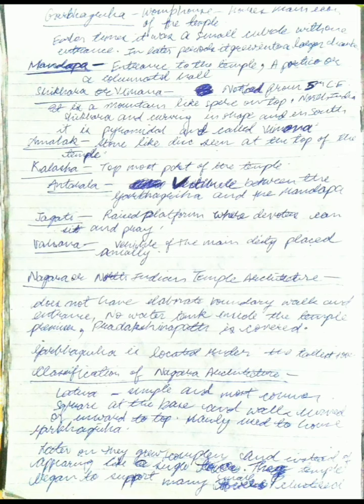The Jagati is a raised platform where devotees can sit and pray. The Vahana is the vehicle of the main deity, placed axially in front of the main shrine. In Hindu culture, different gods have their own Vahanas, and it is an important part of Hindu temples.